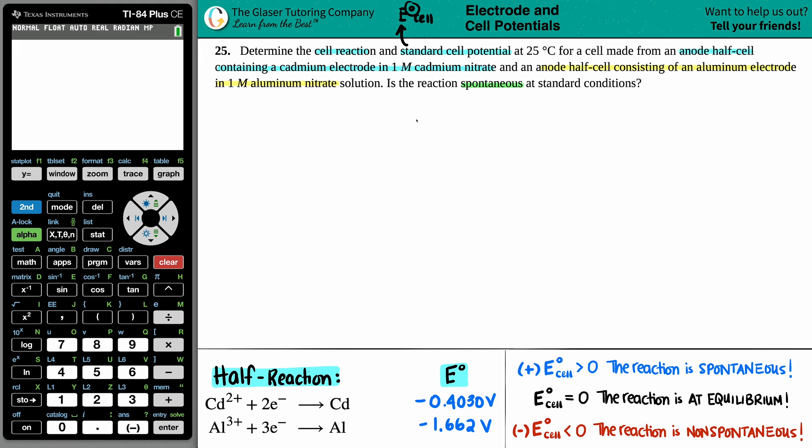And the third thing that we have to find out is, is this reaction spontaneous? Now, the easiest thing to do is first actually look at the problem. What information did they give us?